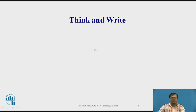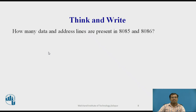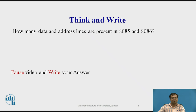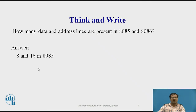Think about this question and try to write the answer: How many data and address lines are present in the 8085 and 8086? Pause this video and write down the answer. The answer is: the 8085 supports 8 data lines and 16 address lines, and the 8086 supports 16 data lines and 20 address lines.